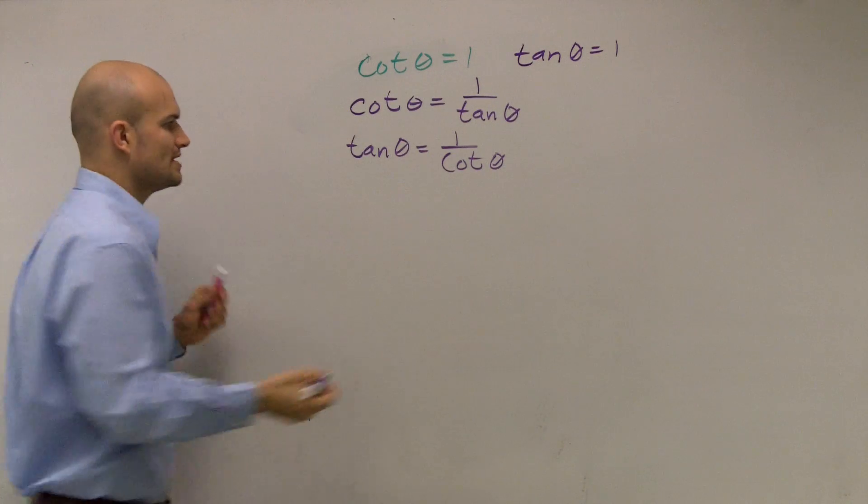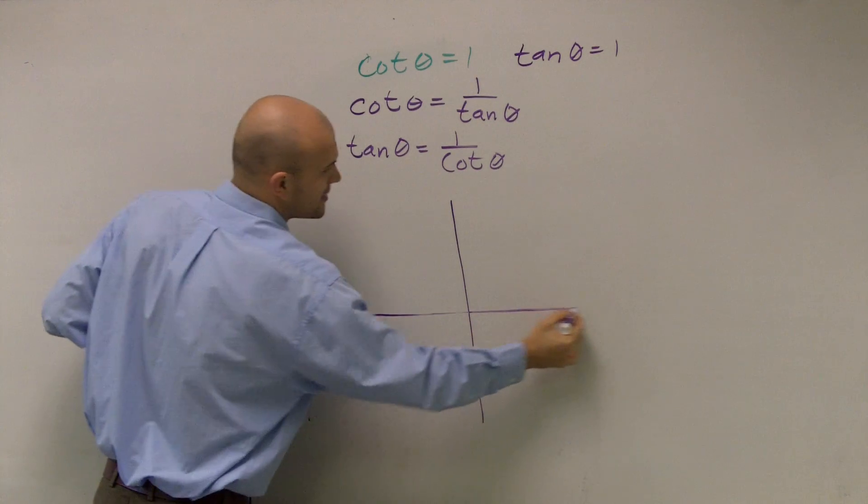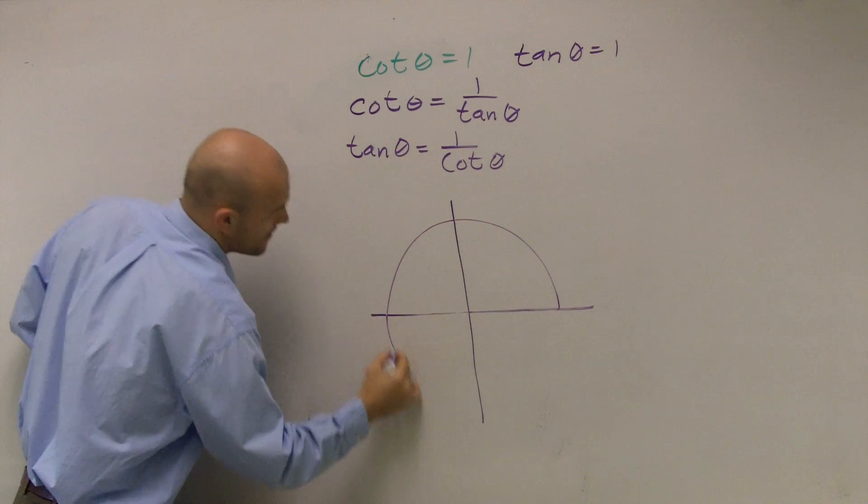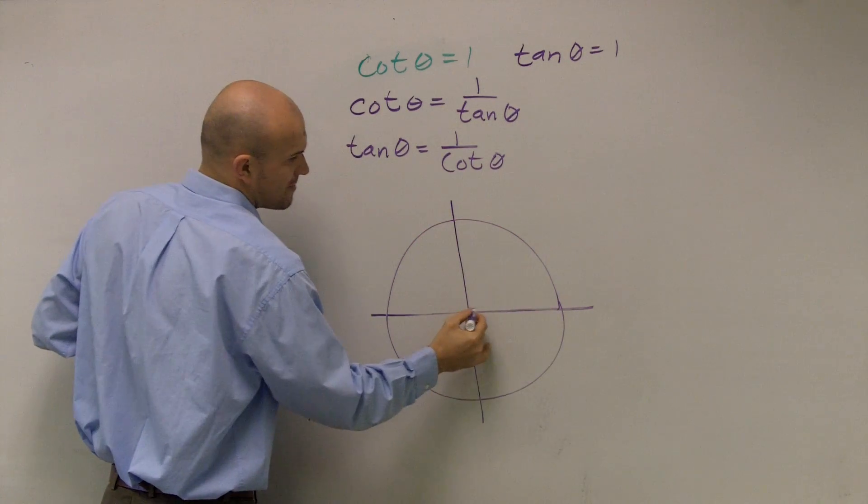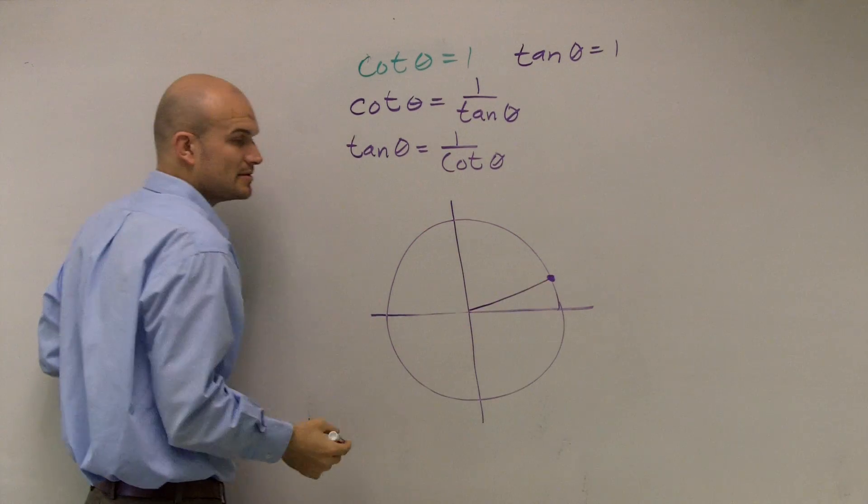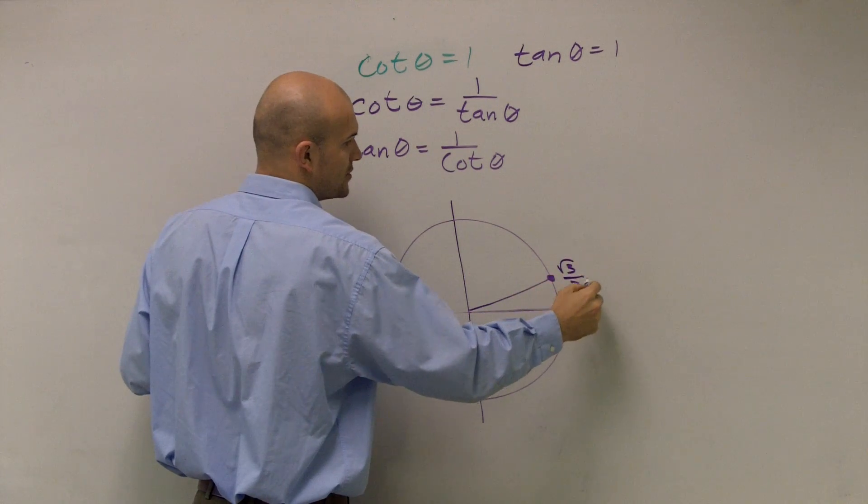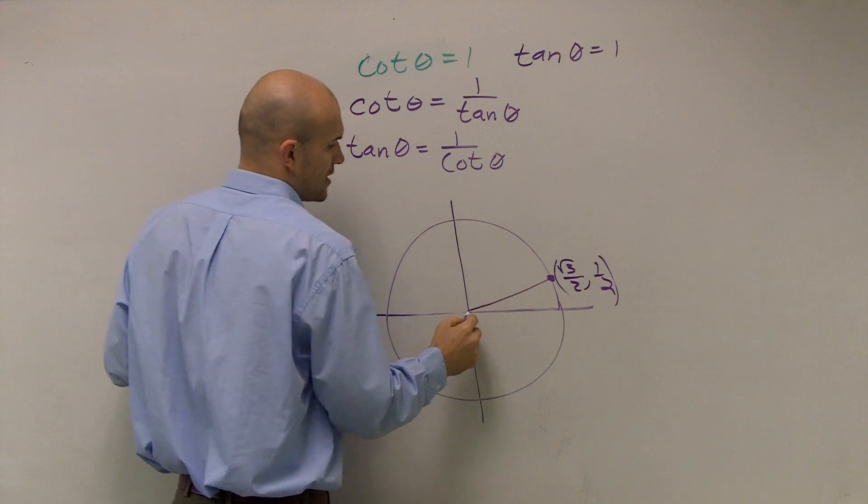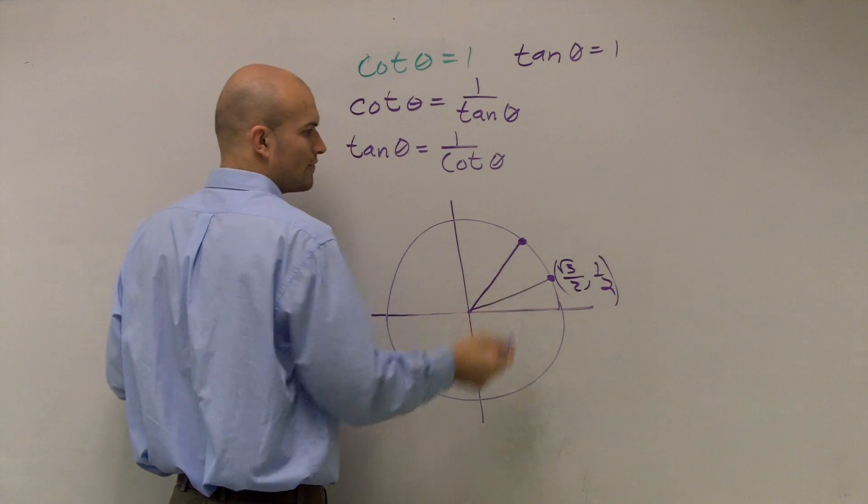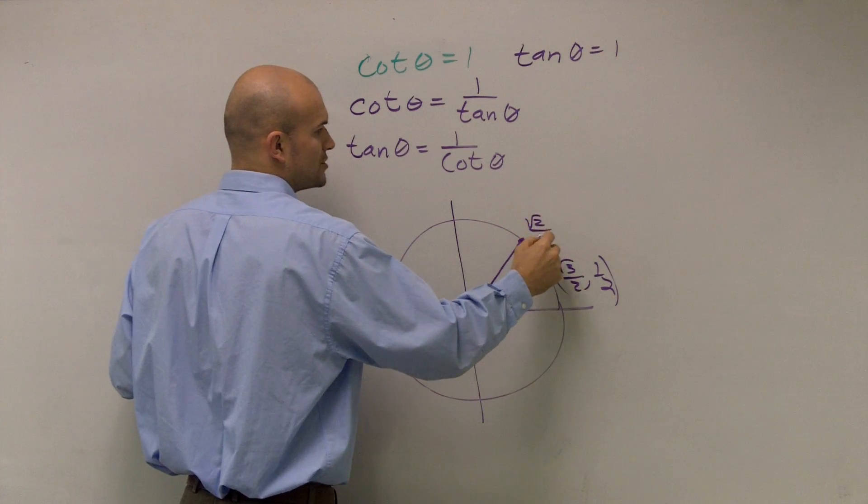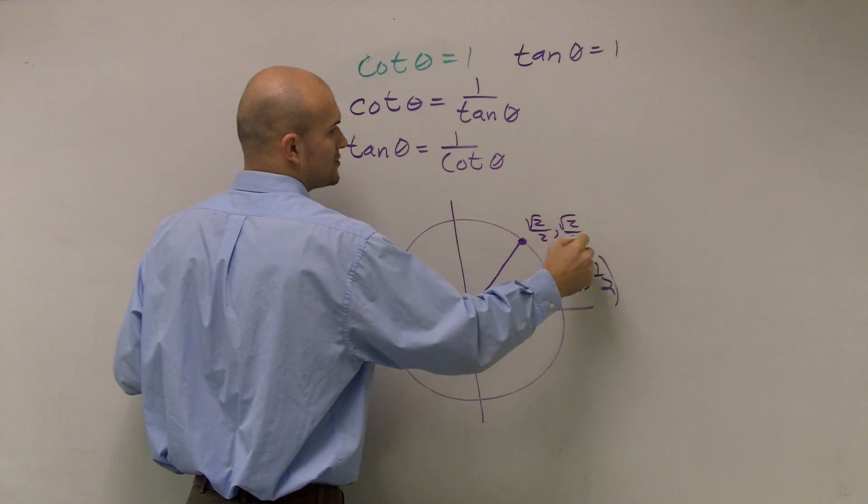So let's go look at a unit circle and see what we can draw up here. If I draw my unit circle again, I have my first point which is at pi over 6 or 30 degrees where I have square root of 3 over 2 comma 1 half. I have my pi over 4 or 45 degrees which is radical 2 over 2 comma radical 2 over 2.